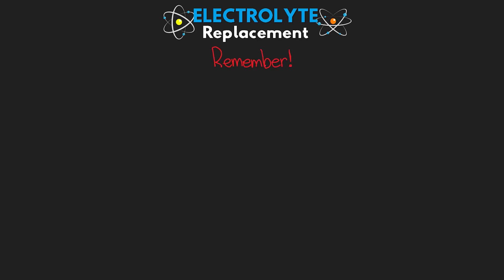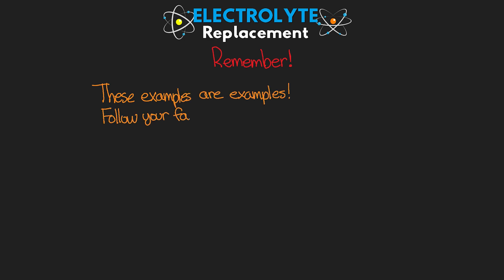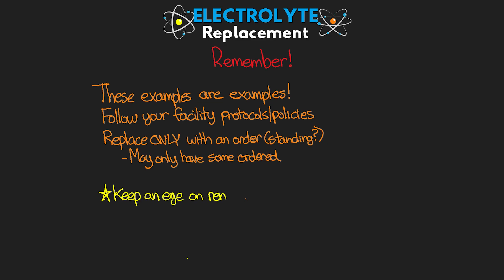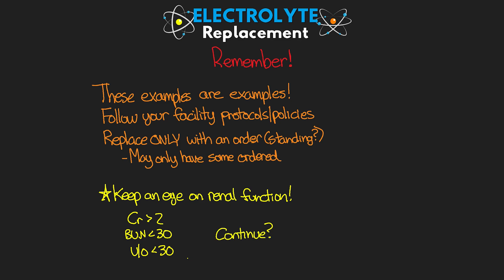The examples I used were just that — to help you guys understand how these protocols work. Make sure you are following your own facility's protocols and policies. Remember that you can only replace with a protocol if it's ordered for your patient — oftentimes we have these as standing orders, but keep that in mind. Sometimes we have standing orders for only some electrolytes and not all. Especially for standing orders, make sure you are keeping an eye on your patient's renal function. If you see creatinine rising above 2, BUN dropping below 30, or urine output falling less than 30 mL per hour, proactively reach out to the provider to see if they want to continue replacement in its current form.